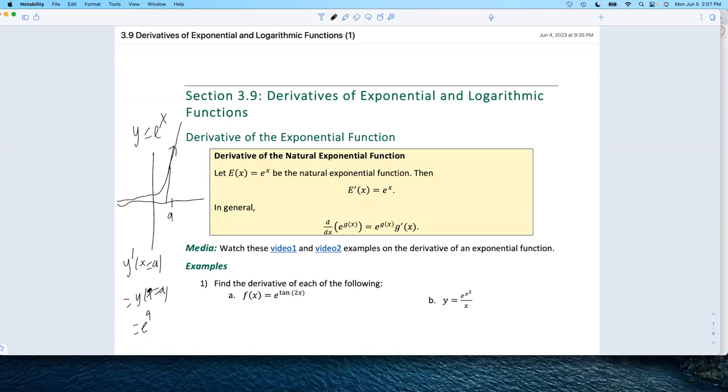There are only two functions such that y prime equals the original function again. This is what's called a differential equation, and this only has two types of solutions: what we call the trivial solution, y equals zero, and then the interesting solution, y equals e to the x.